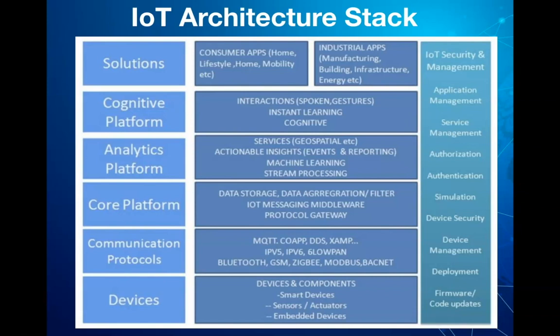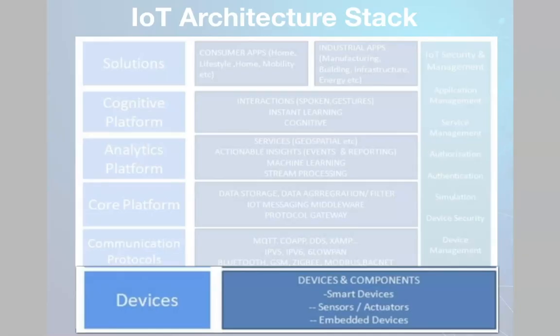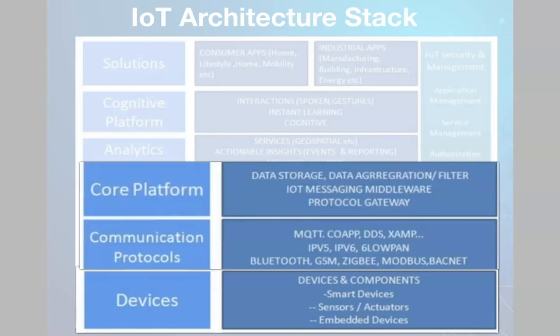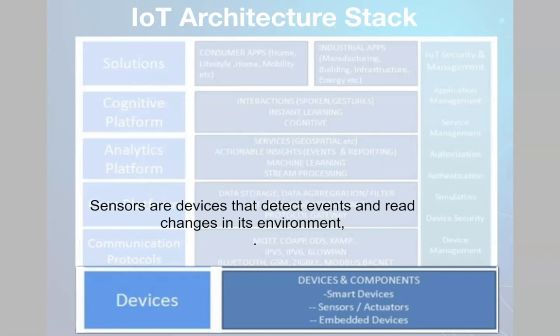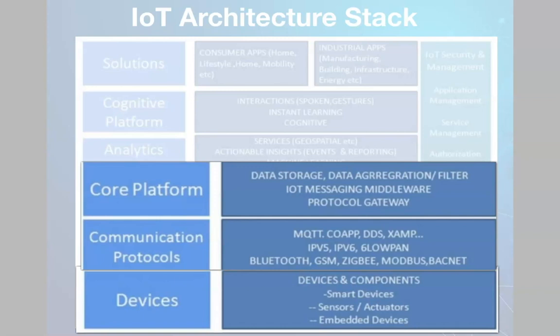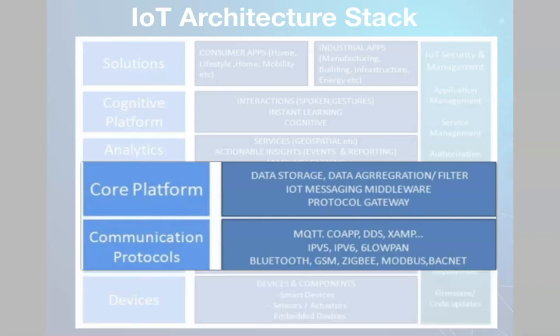As shown in the video, the IoT stack comprises many layers, starting with devices which communicate and send data to the core platform layer through different protocols based on various communication strategies. The device layer consists of sensors, actuators, and prototype devices. It basically senses the environment and uses the communication layer to transfer data to the core platform.